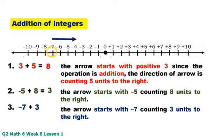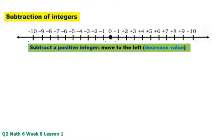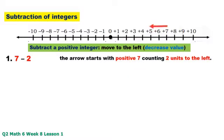The answer is negative 4. Number 3 — Subtraction of integers using the number line: subtract a positive integer, move to the left, or decrease value. Number 1: positive 7 minus positive 2 — the arrow starts at positive 7, counting 2 units to the left: 1, 2. The answer is positive 5. This is the same as positive 7 plus negative 2 equals positive 5.